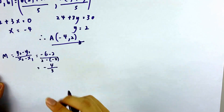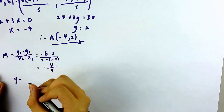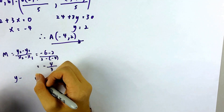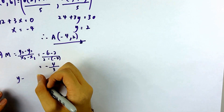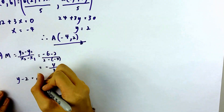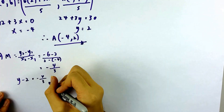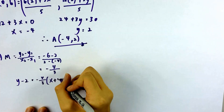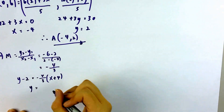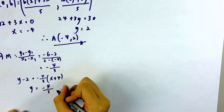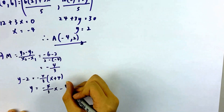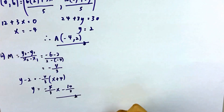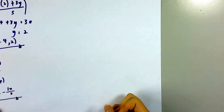The gradient will be negative 4 over 3. For the equation, you use Y minus Y₁ equals M times (X minus X₁) — any coordinates on the straight line will do. Taking the coordinates of A: Y minus 2 equals negative 4 over 3 times (X minus negative 4), which is X plus 4. The final answer is Y equals negative 4 over 3 times X minus 10 over 3. This is the equation of straight line AD.